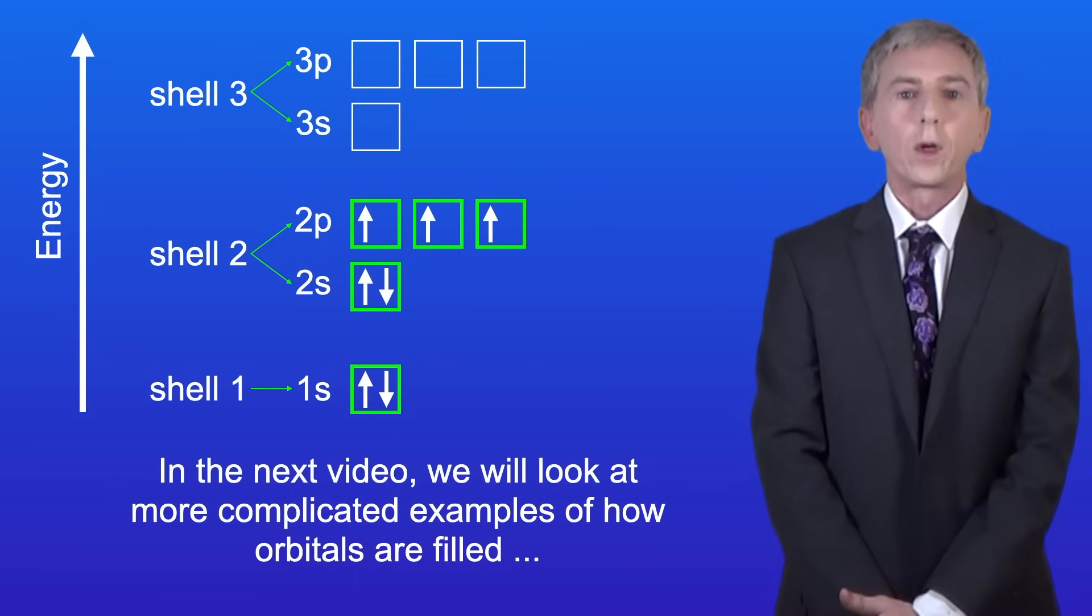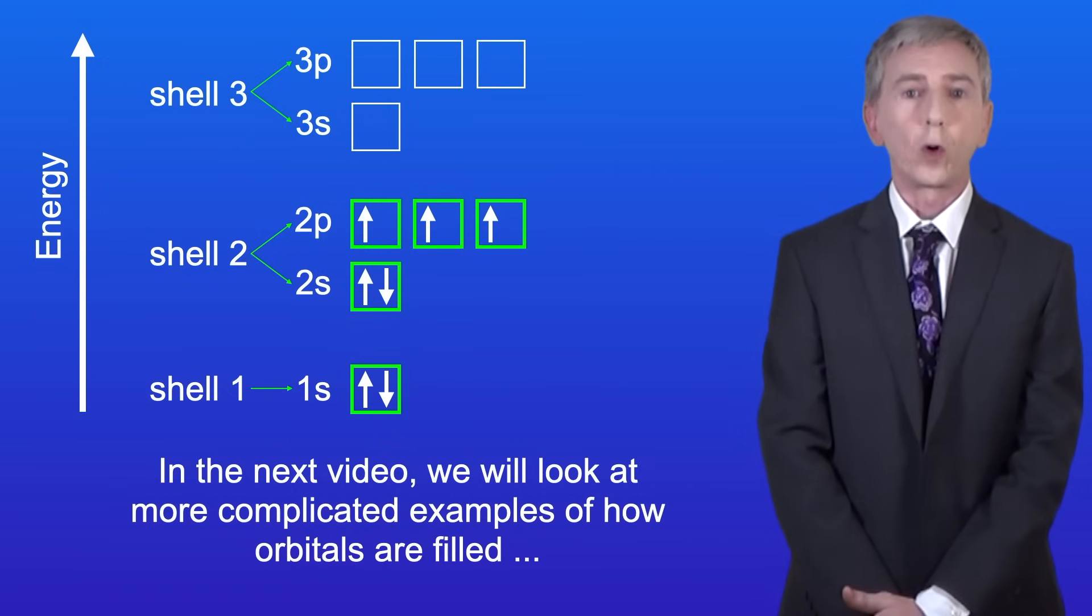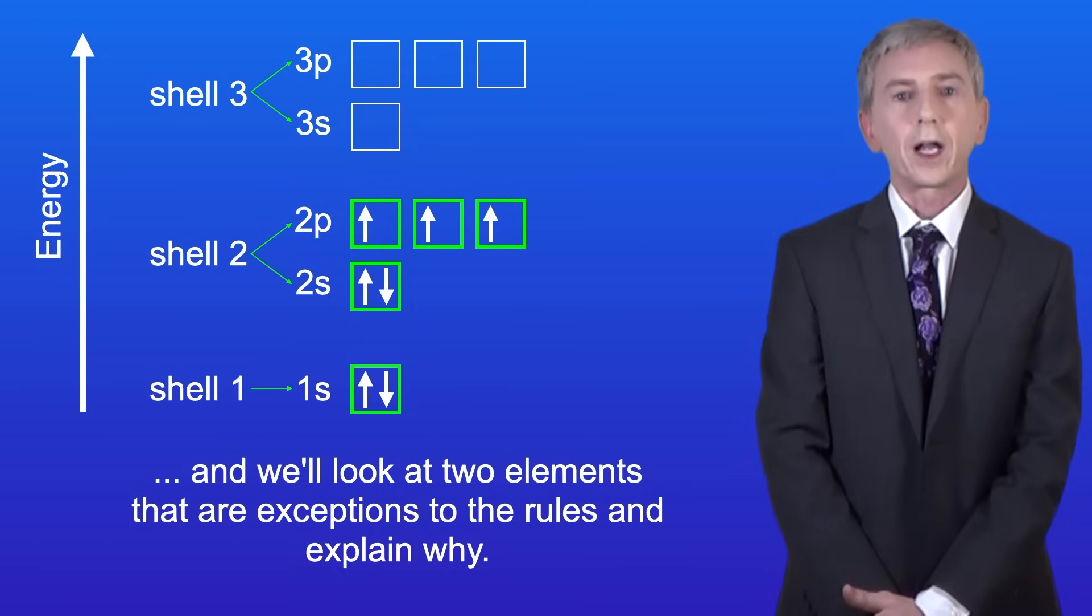In the next video, we look at more complicated examples of how orbitals are filled, and we look at two elements that are exceptions to the rules and explain why.